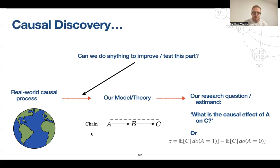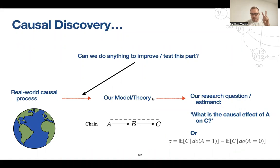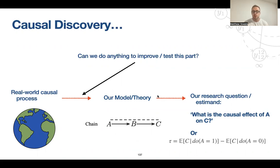But is there anything we can do to improve the step when we go from the real-world process to our model or theory? A lot of the time in practice, I see researchers testing their theory by simply estimating causal effects. But estimating effect sizes isn't quite the same as testing a theory. What we really want is to make sure the causal theory we've specified is consistent with the data we've got. So the question is: can we do anything to improve this process when we go from real-world data to the specification of our theory?